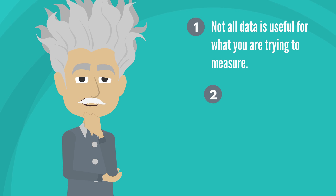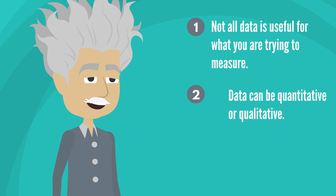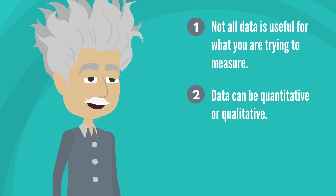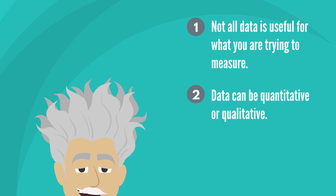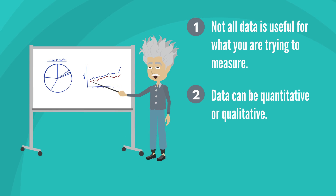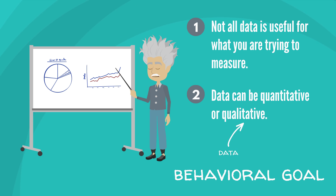Second, some teachers are under the impression that the term 'data' only refers to quantitative or numerical data, but that is not the case. Data can be quantitative or qualitative, and each can provide valuable input into student progress toward their goals. The type of data needed to measure progress depends on the type of goal. For example, if the goal is a behavioral goal, the data is more likely to be qualitative.